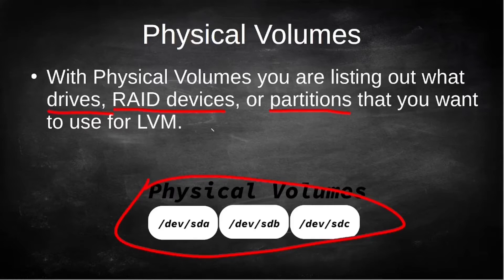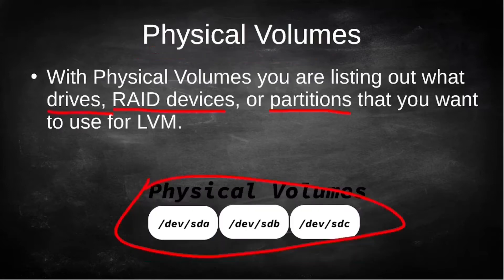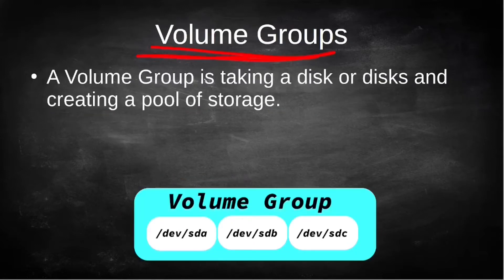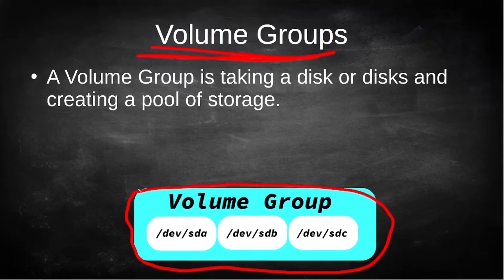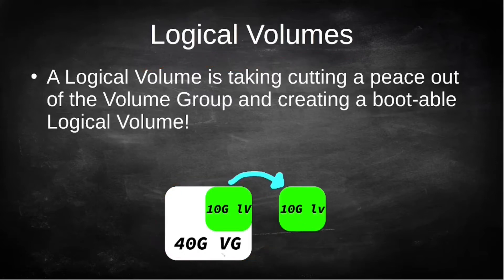Volume groups are where you actually create your pool of storage. Now that we've selected the devices from our physical volumes, we're creating a clearly defined pool of storage called a volume group. For logical volumes, this is where we take our volume group and either separate off a chunk of it to make multiple logical volumes, or take the whole volume group and make it one logical volume. You can portion this off from the volume group, so you can have a 10 gig logical volume, another 10 gig logical volume, or a 20 gig — whatever you want.